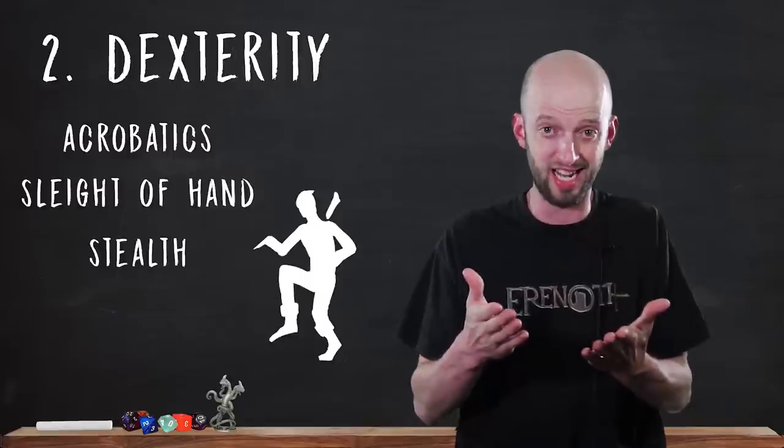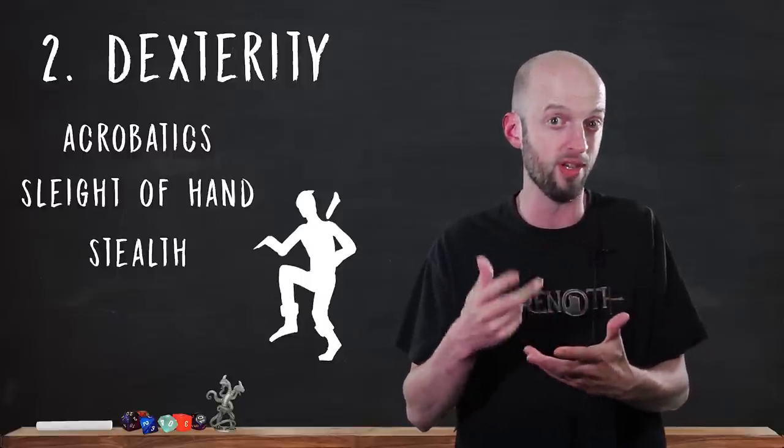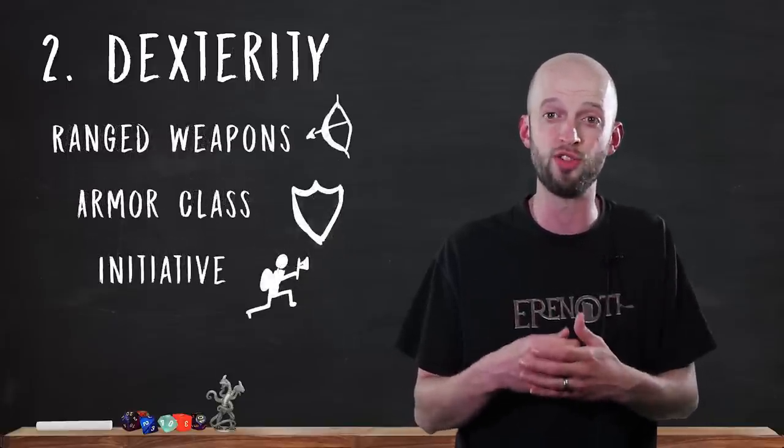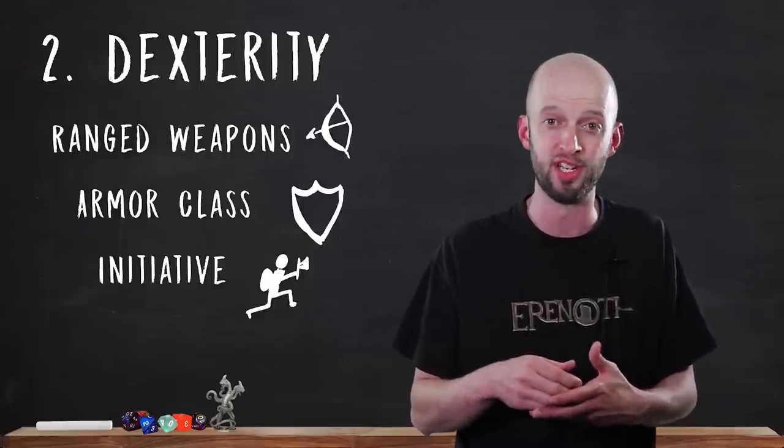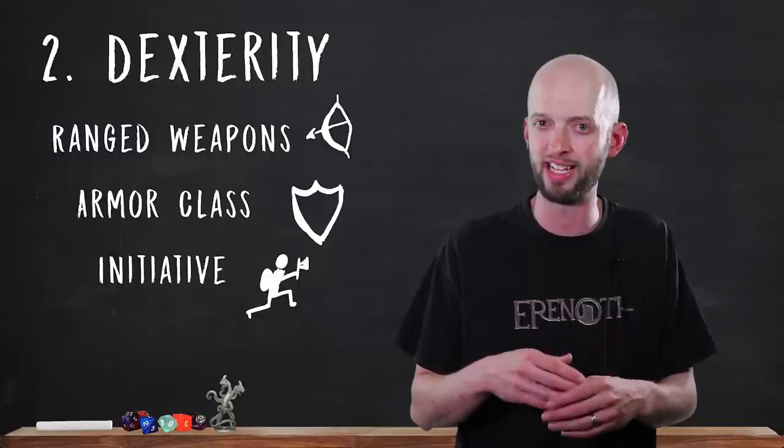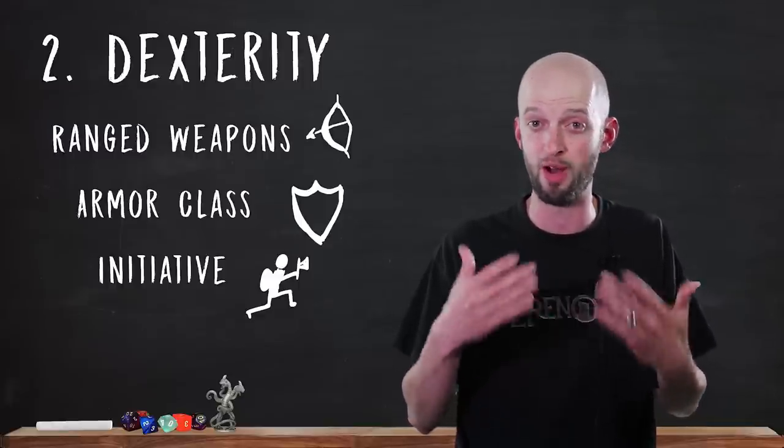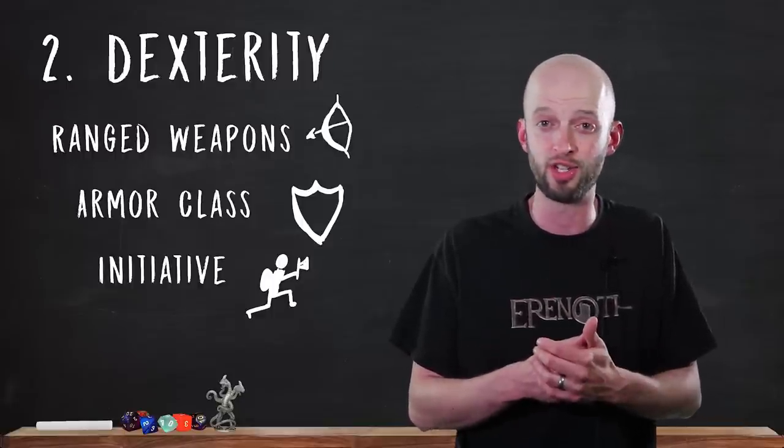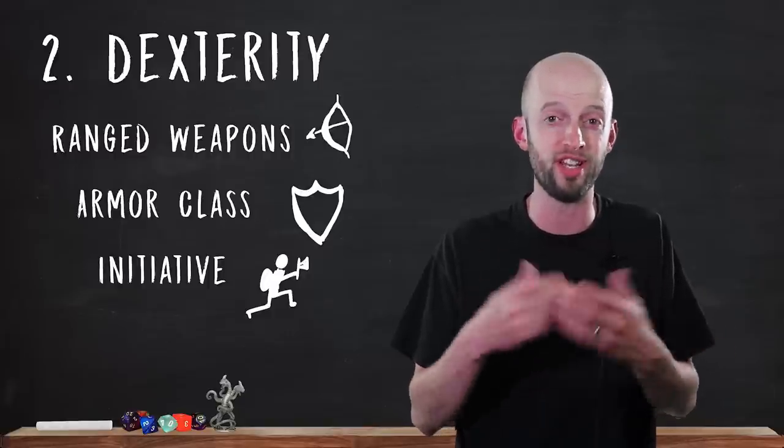Stealth. Trying to hide or remain concealed. Slipping by unnoticed or sneaking up on someone. In addition to these skills, for attacks, ranged weapons use your Dexterity modifier in determining the attack bonus and damage. Any melee weapon that has the finesse property can also use Dexterity as the modifier rather than strength. Other places Dexterity shows up is helping determine your armor class. And also determining your initiative bonus.